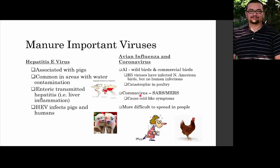Coronaviruses — we heard about SARS and MERS earlier. These are animal viruses that have successfully made the jump to humans. They typically cause cold-like symptoms, but in some cases such as SARS and MERS, they cause fairly severe respiratory syndromes. These particular viruses are a little more difficult to spread to humans and you generally don't see that spread very often.